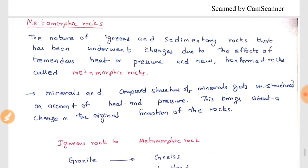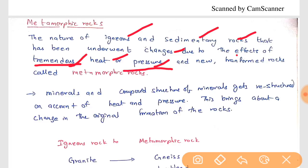Now we will see metamorphic rocks. The nature of igneous and sedimentary rocks that has been underwent changes due to the effect of tremendous heat and pressure. I have said that these are sedimentary rocks, the sedimentary rocks which go beneath the earth and there is a metamorphosis that happens. That is, the change happens in its very nature due to the tremendous heat and pressure, and these are transformed or metamorphosed into some rocks called metamorphic rocks.